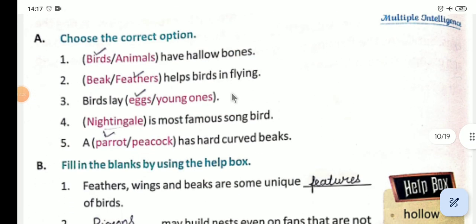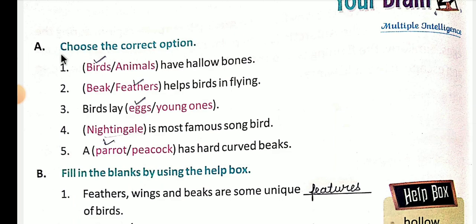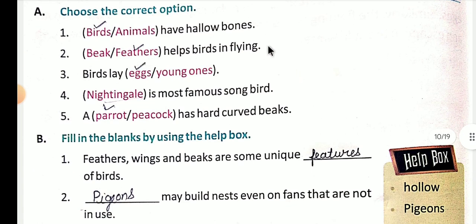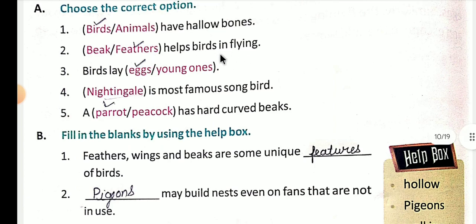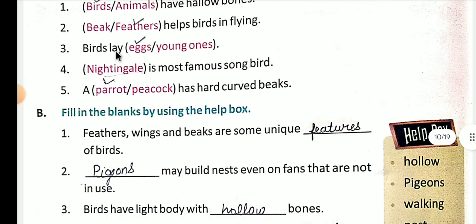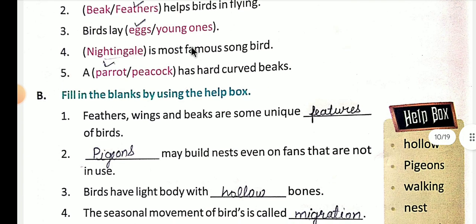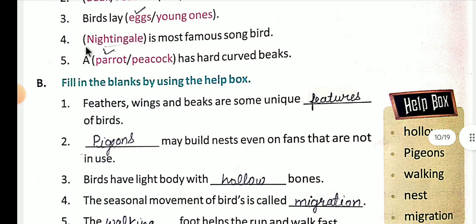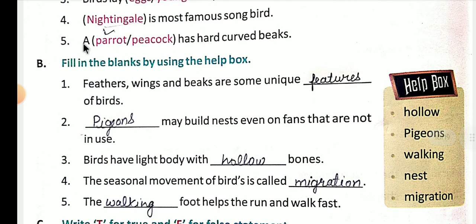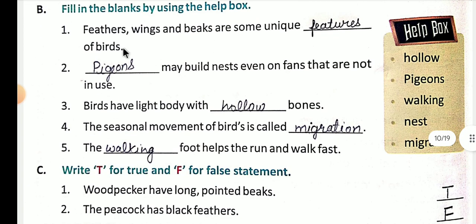Ab exercise hai. Pehle hame correct option choose karna hai. Birds have hollow bones. Feathers help birds in flying. Birds lay eggs — jo pakshi hote hain wo ande dete hain. Yahaan par ek hi option diya hua hai to isko aap nahin karenge. Next: a parrot has a hard curved beak — aur jo parrot hota hai uski hard curved beak hoti hai.